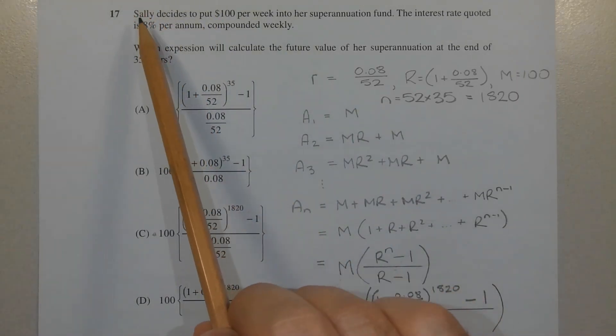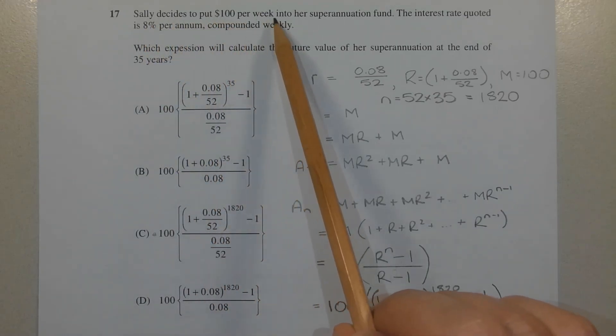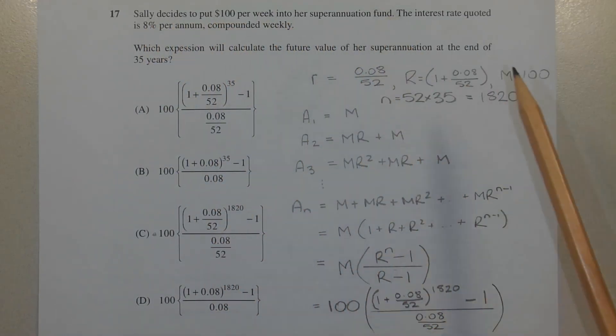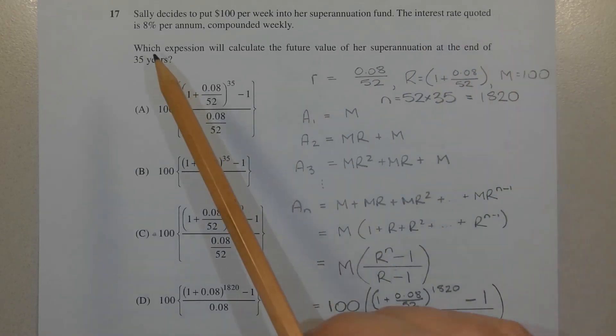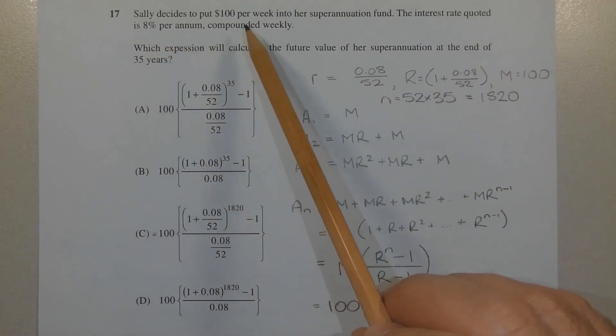Let's go back to the question. Sally decides to put $100 per week into her superannuation fund. I'm going to let capital M equal 100, representing her weekly contribution. The interest rate quoted is 8% per annum, compounded weekly.